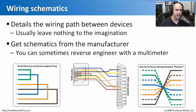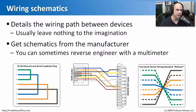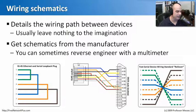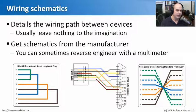Wiring schematics are a great piece of documentation because we need to understand how devices are connected to each other. This is usually a very detailed description of exactly how wires are configured. This example shows a wiring schematic where we are looking exactly inside the ports themselves at what's connected to where. Sometimes you get these schematics from a manufacturer — they'll give you a cable and tell you pin 1 connects to pin 10 on the other side.